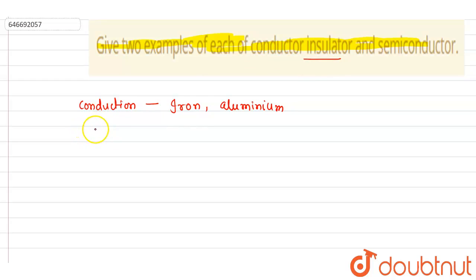Insulators which cannot conduct electricity at all. For example, if you take plastic, however will be the potential difference applied across that, no current will flow through that.